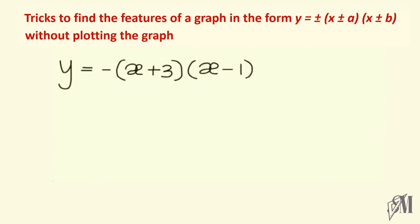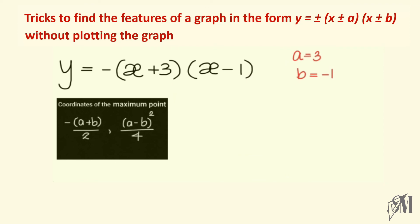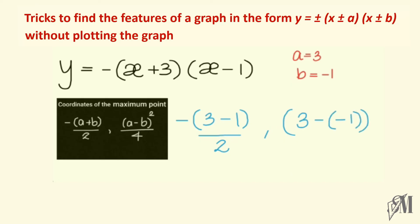Look at this equation: minus (x plus 3)(x minus 1). Here since the function is minus, the graph will attain a maximum. To find the remaining features, we identify a equals 3 and b equals minus 1. To find the maximum point, substituting: the x-coordinate is minus (3 plus minus 1) divided by 2, and the y-coordinate is minus (3 minus of minus 1) squared divided by 4. Once simplified, you get (minus 1, 4). So this is the maximum point of the function.